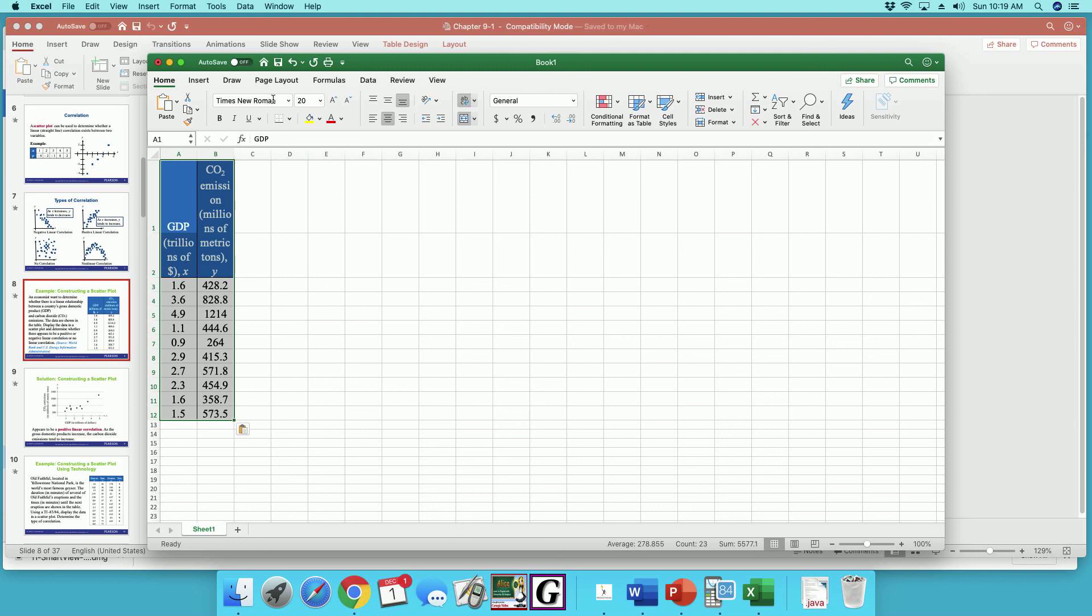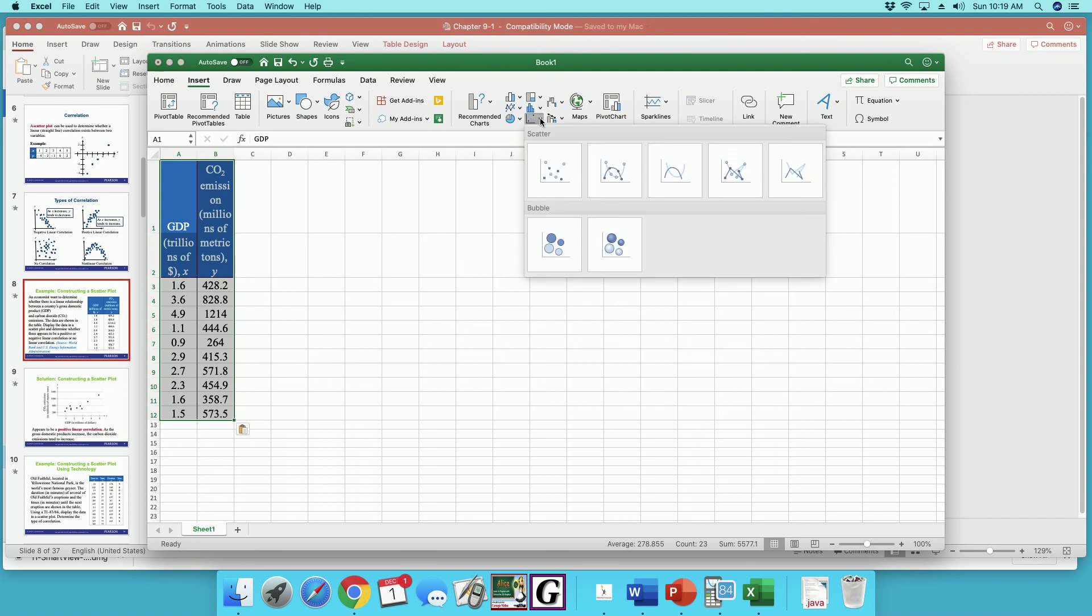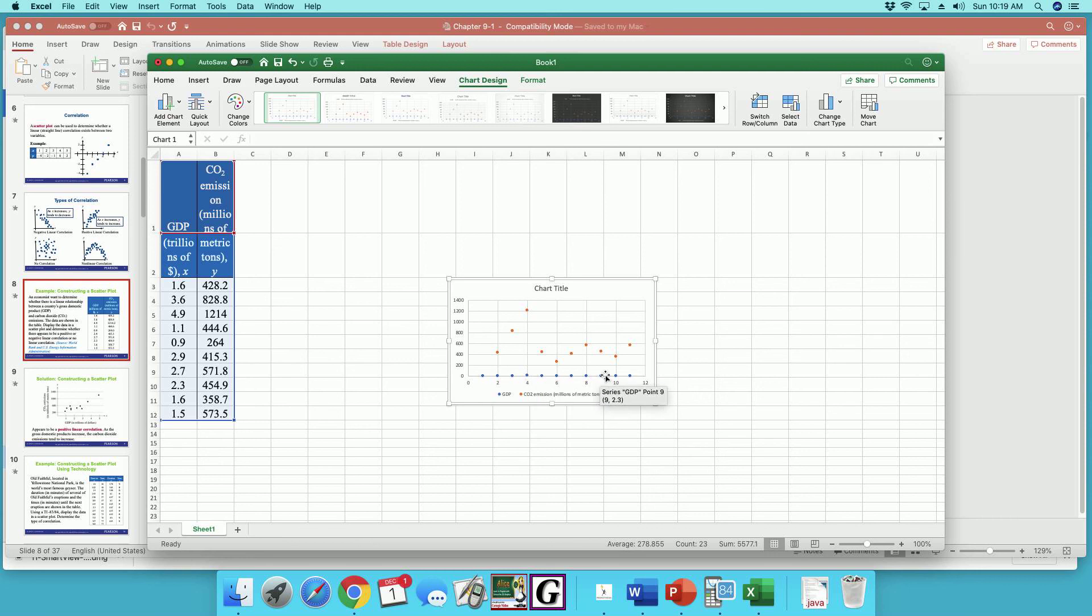And then I'm going to insert a scatter plot. I'm going to go down to my XY. And notice you have these blue dots down there.